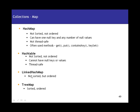LinkedHashMap is not sorted but is ordered. TreeMap is both sorted and ordered. All other features are the same as discussed earlier. These are the basic implementations we have in Java collections.